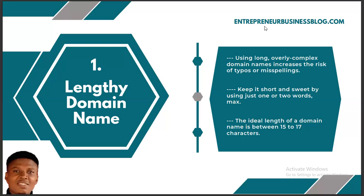If you can get a name that is just one word, easy to spell, and easy to write, go ahead and use it. It is better than using a lengthy domain name. You can even sweeten the deal by using one or two words that are a keyword in the niche you are targeting. For example, if I'm running a blog in the business niche and I come up with entrepreneurniche.com, that's aligned with my niche and easier to remember. The ideal length of a domain name shouldn't be more than 15 to 17 characters — mine is over 20, which is not ideal.